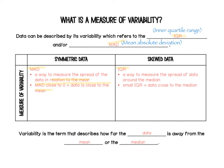The interquartile range, which we will focus on tomorrow, is a way to measure the spread of data around the median. A small interquartile range means the data is close to the median. So variability is the term that describes how far the data is away from the mean or the median.